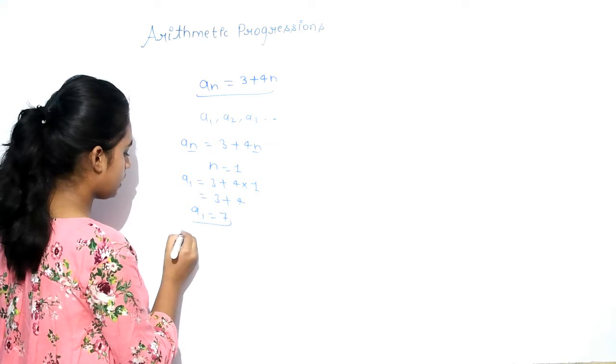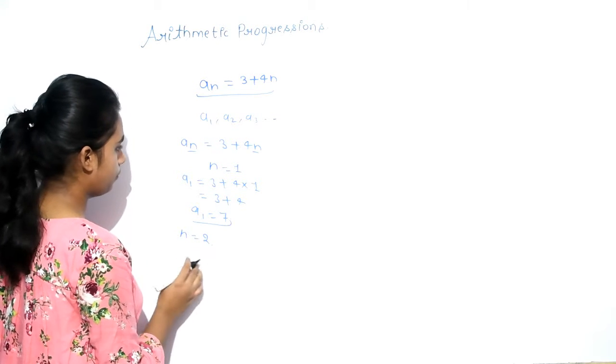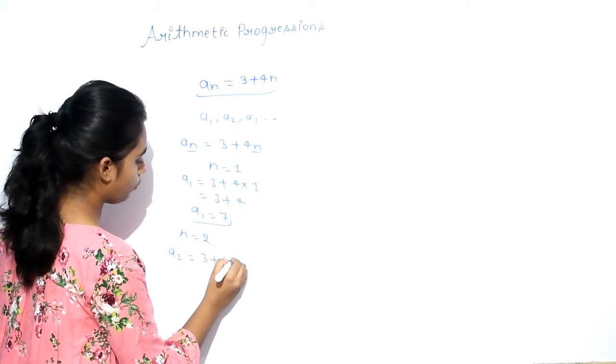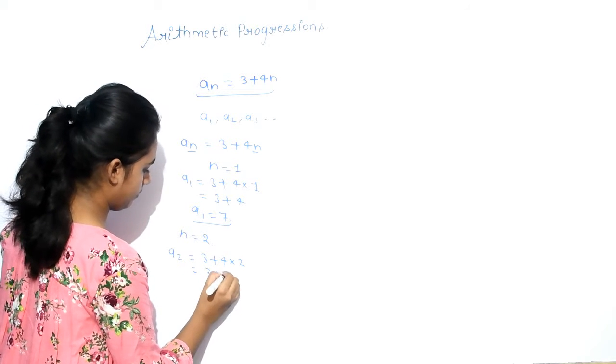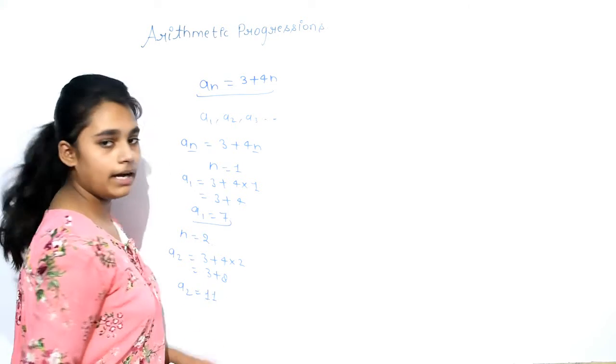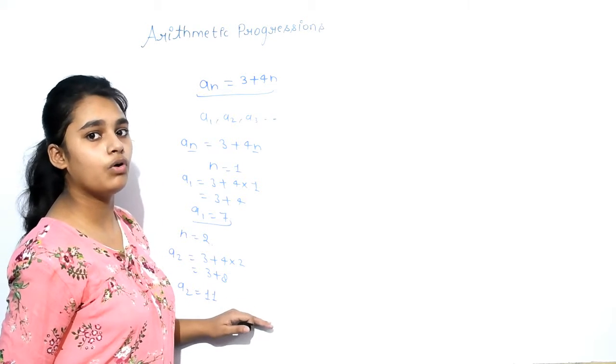Now, same as we put N equals to 2. So A2 equals to 3 plus 4 into 2, that is 3 plus 8. And our A2, that is the second term of AP, is 11. By these two values of N, we can know our AP.